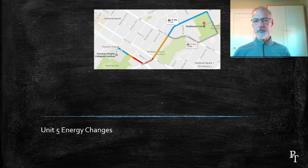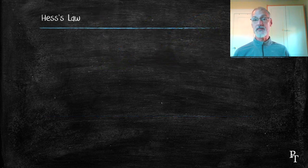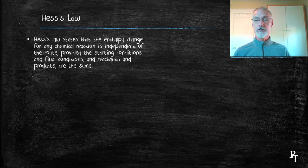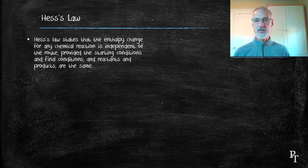We do use this concept also in chemistry, in something called Hess's Law. Let's look more specifically at what Hess's Law says. The idea is that the enthalpy change for any chemical reaction doesn't depend on the route, provided your starting conditions and final conditions, as well as reactants and products, are all the same.